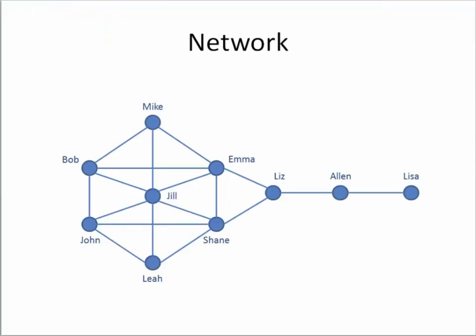Let us now start from an example. This example looks familiar. We can see that we have 10 individual nodes, and those 10 individual nodes are connected with 19 individual relations. The question becomes how difficult it is for the nodes in this network to communicate and share information.